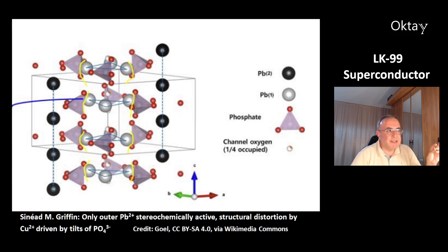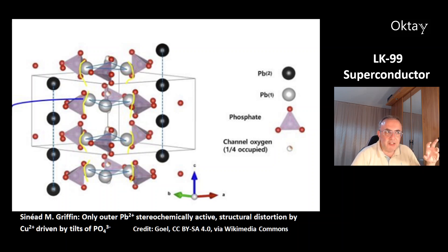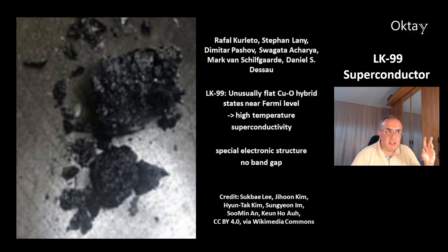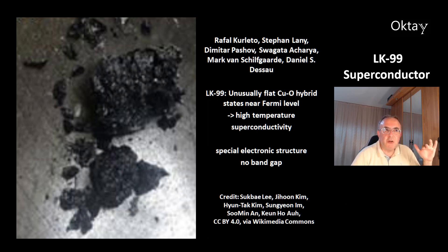Another work by Sinead M. Griffin shows that only the outer lead ions are stereochemically active, and the structural distortion caused by copper doping is driven by tilts of the phosphate ions. A further paper by Rafael Coelito and colleagues finds that LK99 has an unusually flat copper oxide hybrid state near the Fermi level, which gives it its high-temperature superconductivity and a special electronic structure. According to their model there is no band gap, which is also a favorable result.